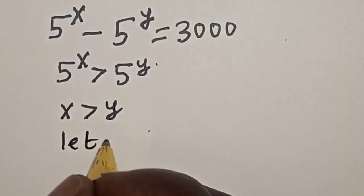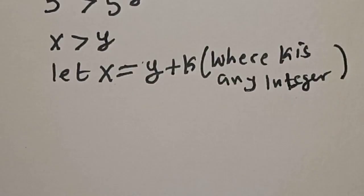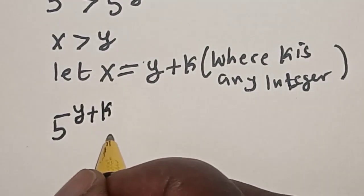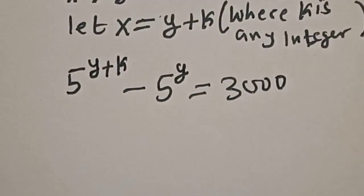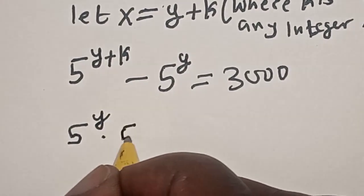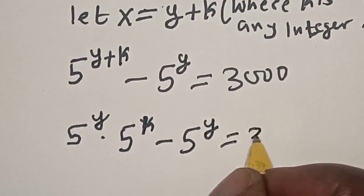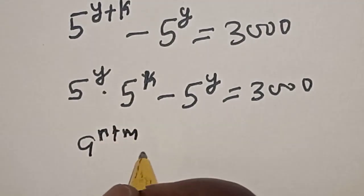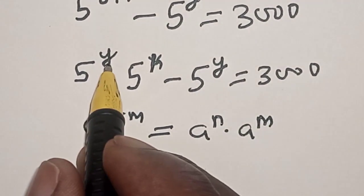Now, let x equal y plus k. We'll have 5 raised to power y plus k minus 5 raised to power y is equal to 3,000. Then, this becomes 5 raised to power y multiplied by 5 raised to power k, minus 5 raised to power y, is equal to 3,000. That is, using the rule: a raised to power n plus m equals a raised to power n multiplied by a raised to power m. Then, 5 raised to power y is common.